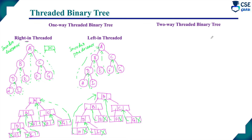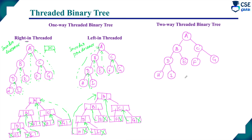For two-way threaded binary tree, both the left and right links are considered. For leaf nodes, both null links are utilized: the left pointer connects to the in-order predecessor, and the right pointer connects to the in-order successor. For the first node, since there is no in-order predecessor, it connects to the root. For the last node, since there is no in-order successor, it also connects to the root.